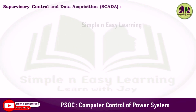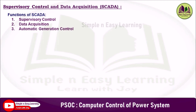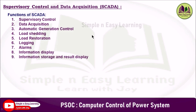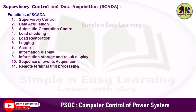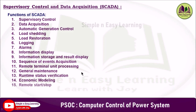The functions of SCADA include: supervisory control, data acquisition, automatic generation control, load shedding, load restoration, logging, alarms, information display, information storage and result display, sequence of event acquisition, remote terminal unit processing, general maintenance, runtime status verification, economic modeling, remote start and stop function, and load matching based on economics.